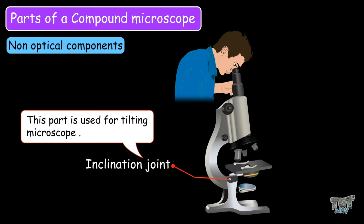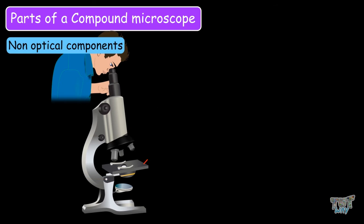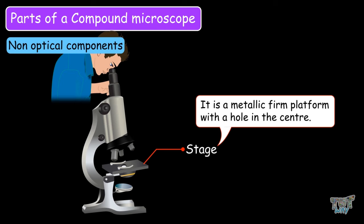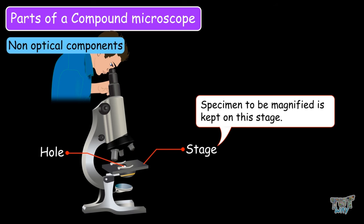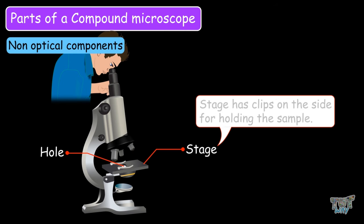The inclination joint is the part used for tilting the microscope. Next is the stage, which is the same as in the simple microscope. It is a firm metallic platform with a hole in the center. Specimens are kept on the stage and receive light from below through this hole. The stage also has clips on the side for holding the sample.